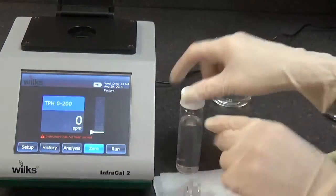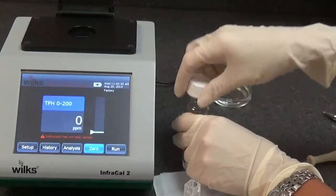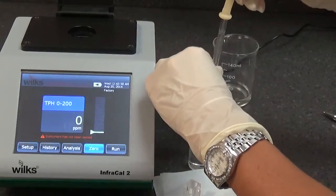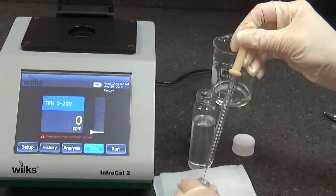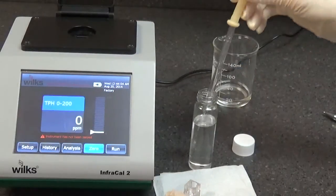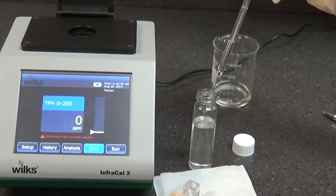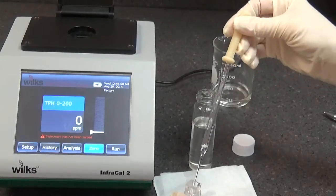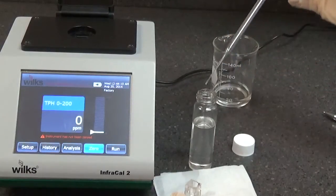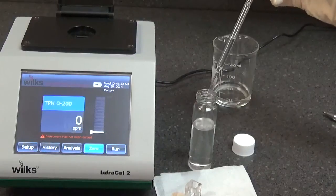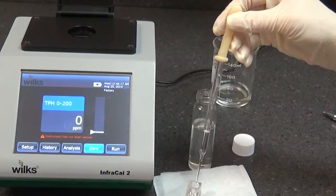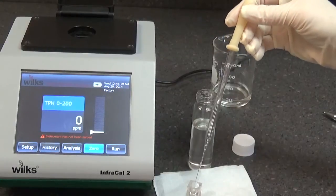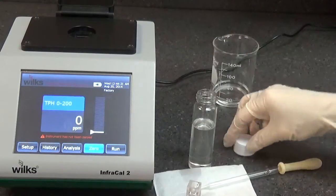Zeroing the analyzer. The frequency for zeroing depends on the required sensitivity. For levels above one ppm, every one to two hours should be sufficient. Fill the cuvette with the same clean solvent that you will be using for the sample analysis. Insert the cuvette with the frosted side facing toward the front.